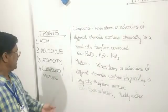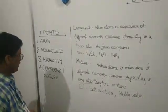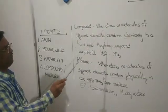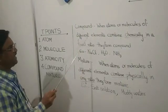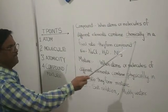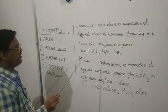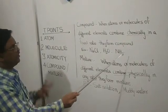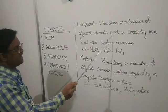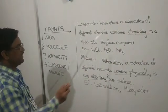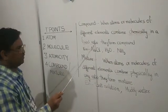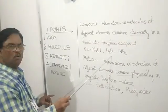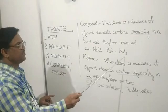Now we are going to learn the difference between compound and mixture. When atoms or molecules of different elements combine chemically in a fixed ratio, they form a compound. Two key words to note: they combine chemically, and in a fixed ratio. Examples of compounds: NaCl (sodium chloride), H2O (water), and NH3 (ammonia).